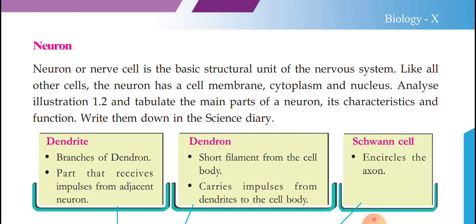If you see the structure of the neuron: since a neuron is an animal component, it does not contain a cell wall. It contains a cell membrane, then cytoplasm — the liquid part inside the cell — and then a nucleus, which contains genetic material like DNA and RNA. These are the major components present in the neuron: cell membrane, cytoplasm, and nucleus.